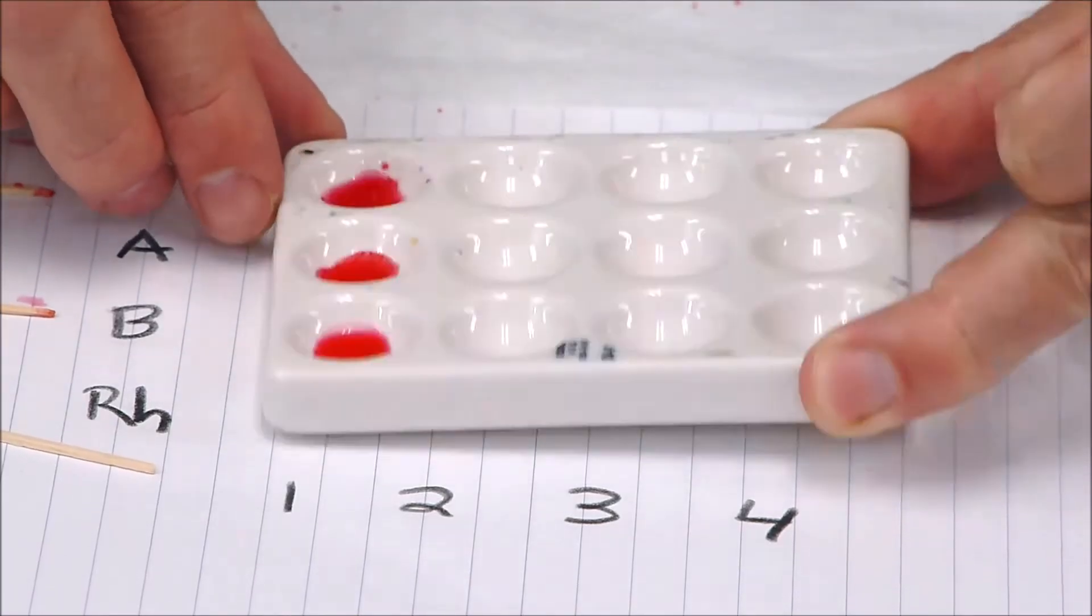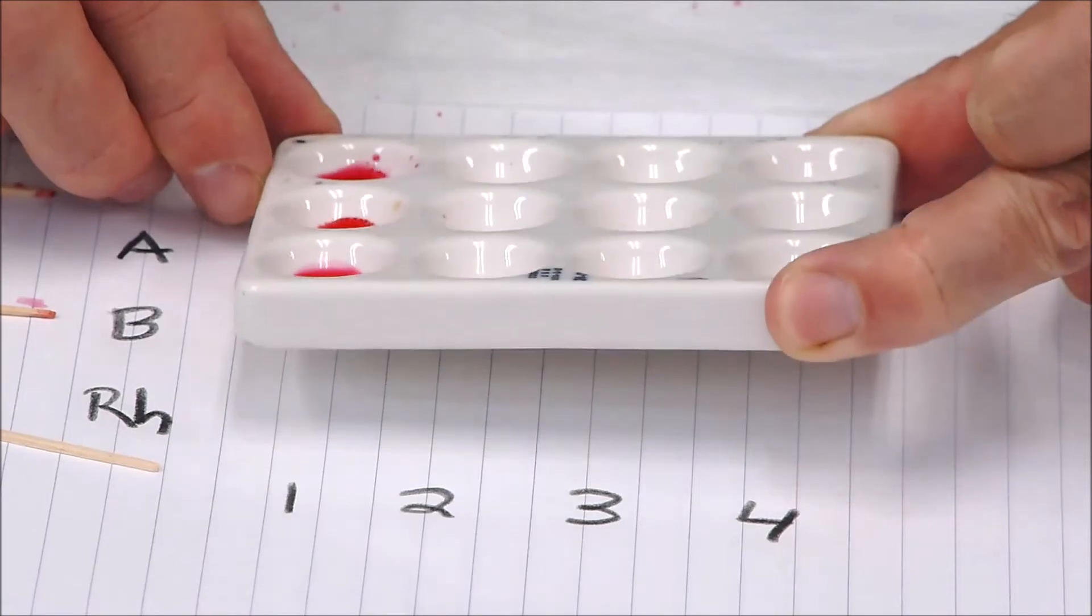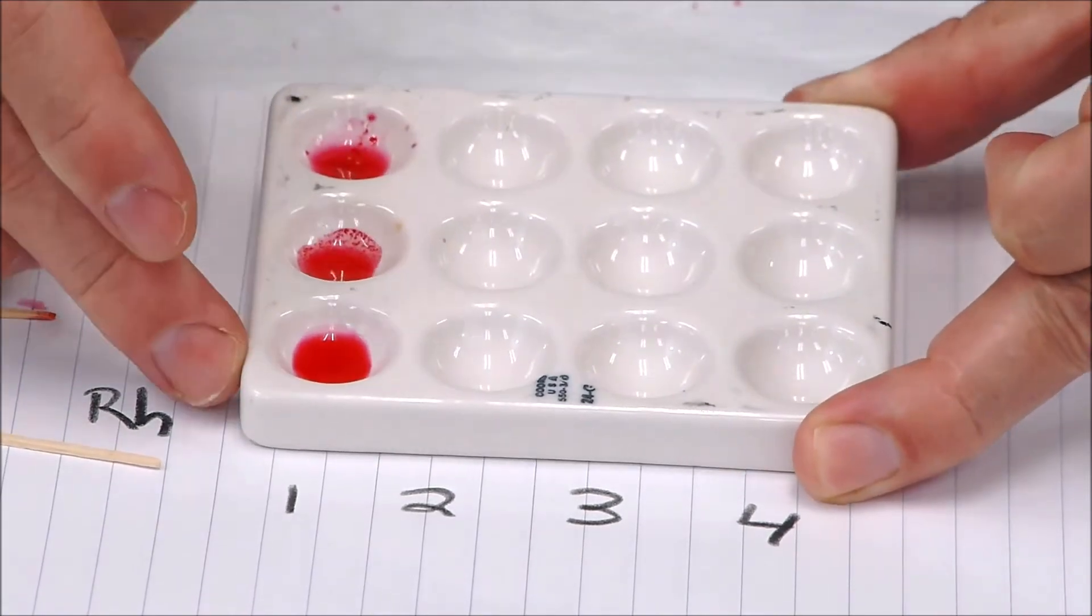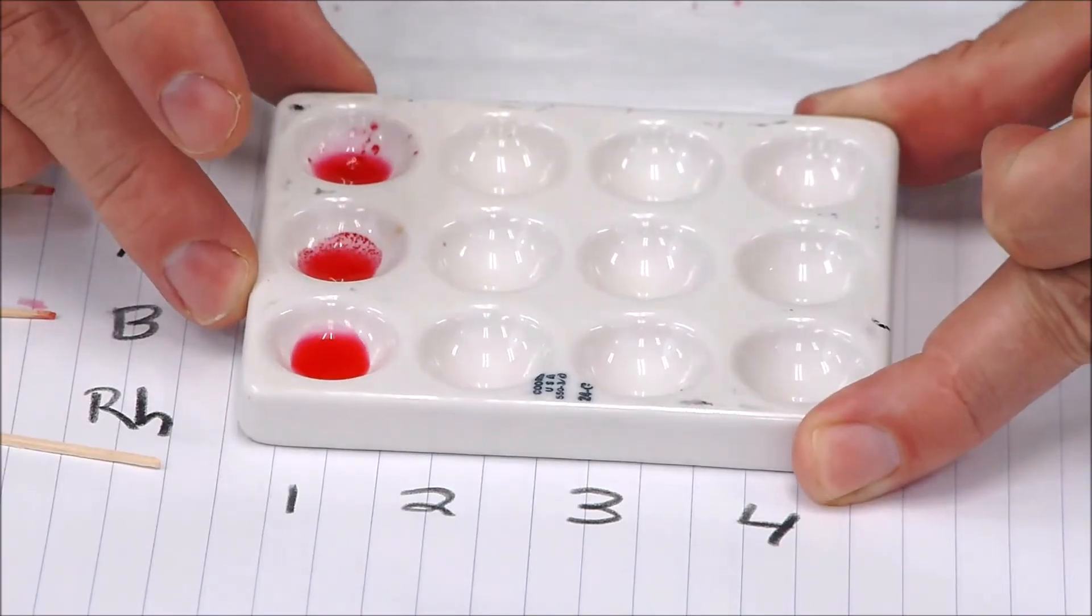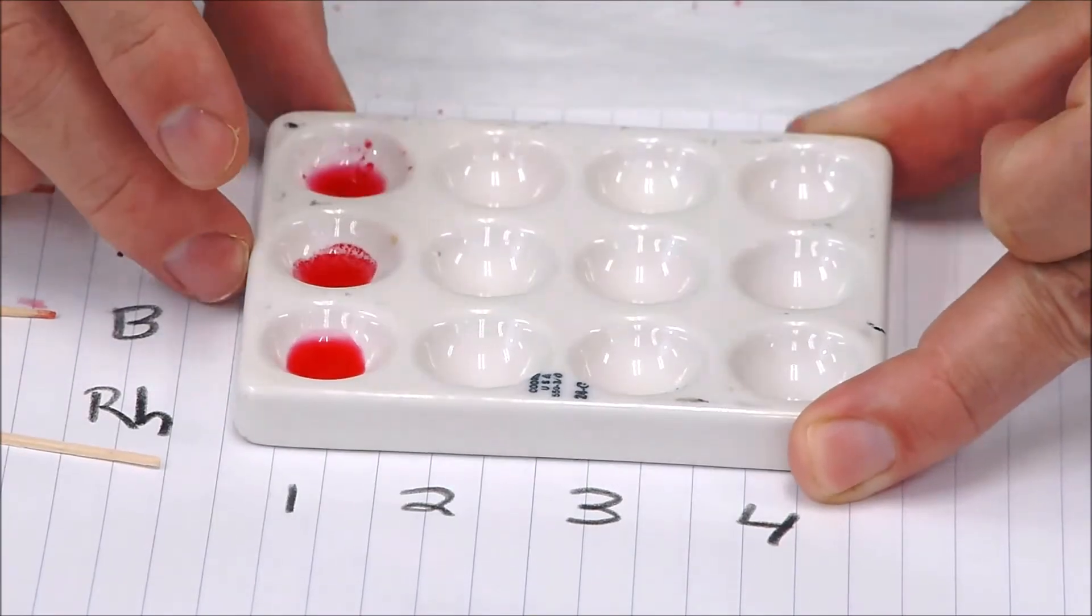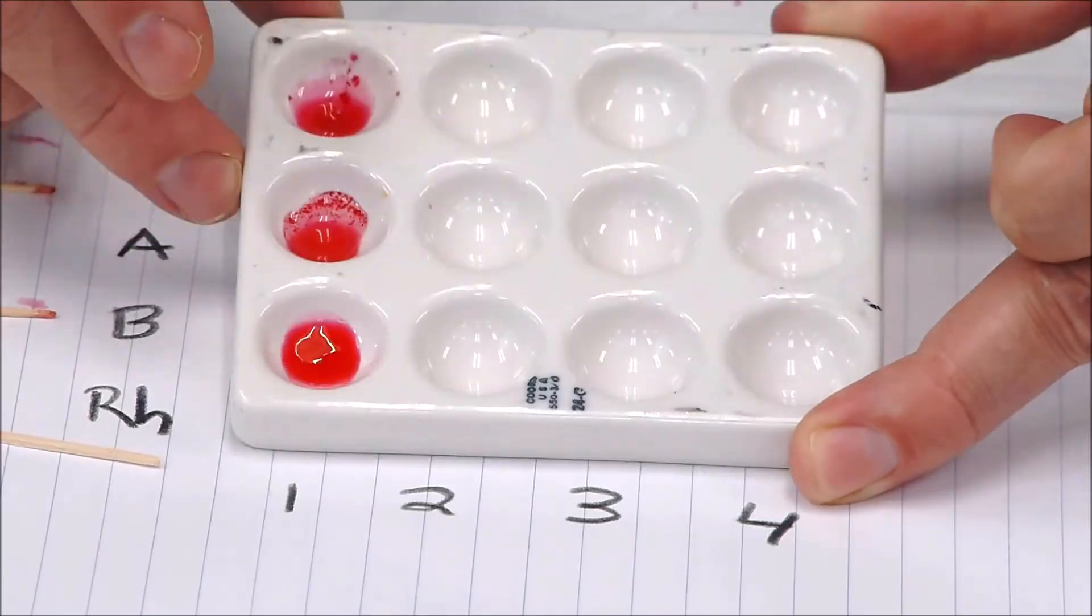For A here, I don't think I have a reaction right now—we'll come back and look at that in a second. And it doesn't seem that I have a reaction on the Rh factor. So right now it looks to me like this is going to be B negative blood, but we'll give it time to continue to react.